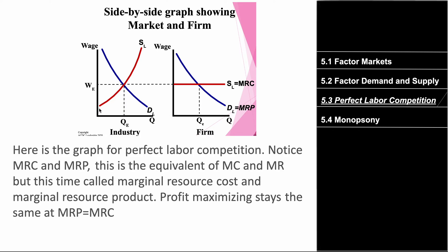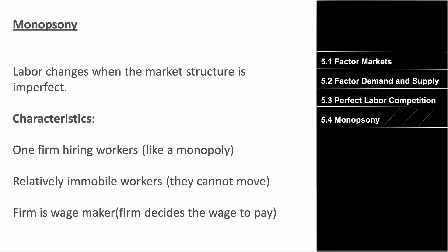For the industry or market graph, it's basic supply and demand. But for the firm, demand is downward sloping and supply is a horizontal (constant) line. MRC equals MRP is the profit-maximizing point — remember, it's not MR equals MC, but MRP equals MRC. MRP is the marginal revenue product and MRC is the marginal resource cost. MRC is essentially the marginal cost, and MRP in this situation is essentially the marginal revenue. Their intersection is the profit-maximizing point.